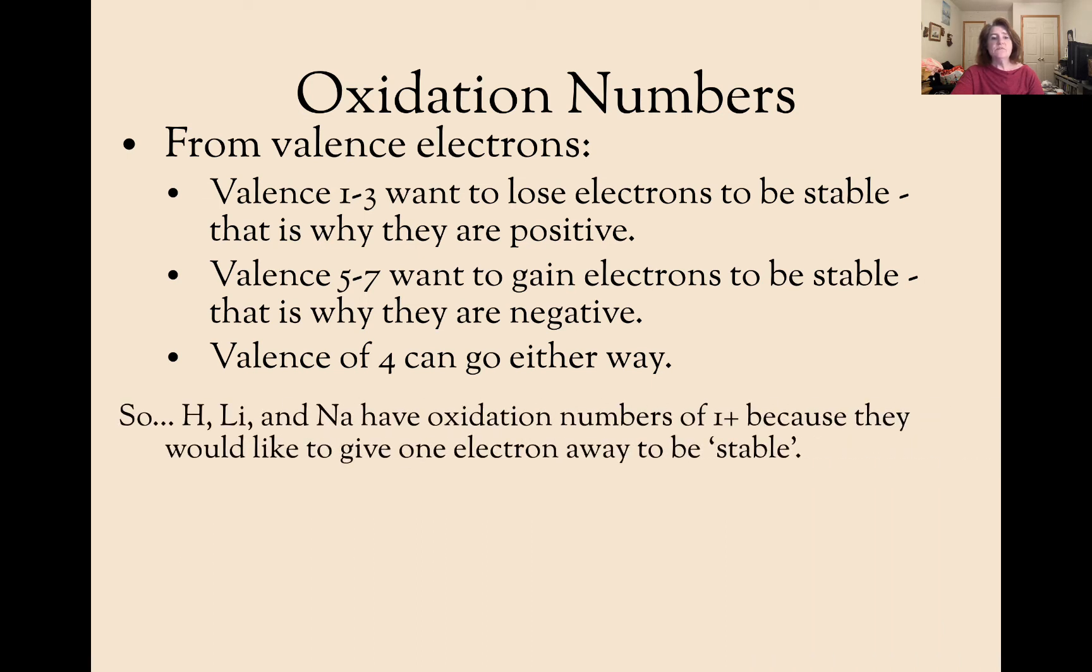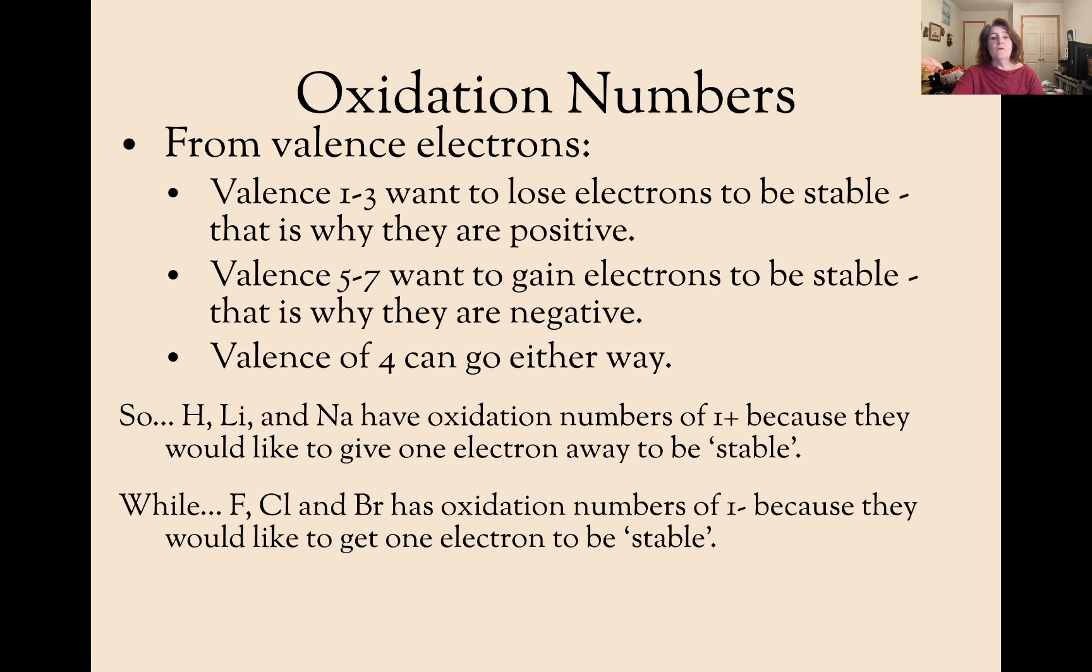So hydrogen, lithium, sodium, they all have oxidations of 1 positive because they have one extra electron in their outer valence shell that they would like to give away in order to be stable. While at the same time, fluorine, chlorine, and bromine have oxidation numbers of 1 negative because they have one empty seat in their valence shell and they would like to gain that in order to become stable.